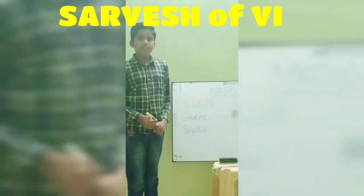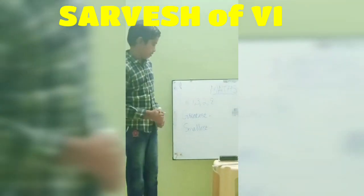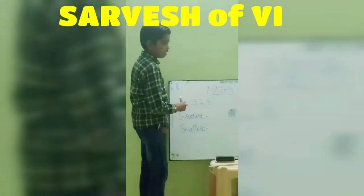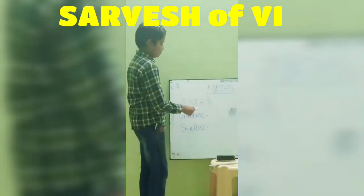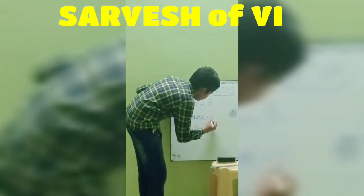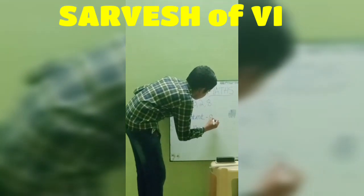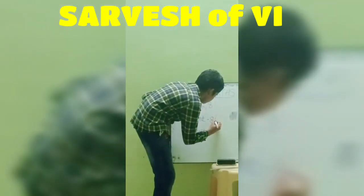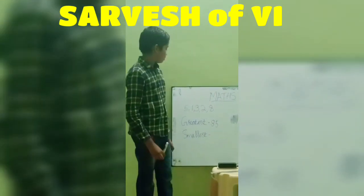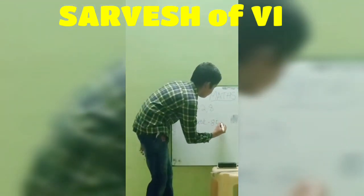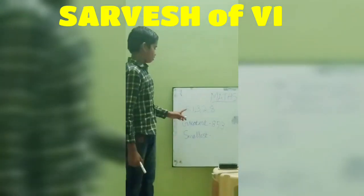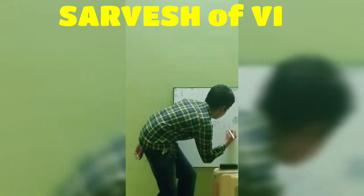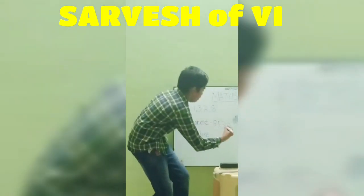Now, we can form a 5-digit greatest number. Which is the greatest number among these digits? 8. Next, 5. Next, 3. Next, 2. Next, 1. So the greatest number is 85321.